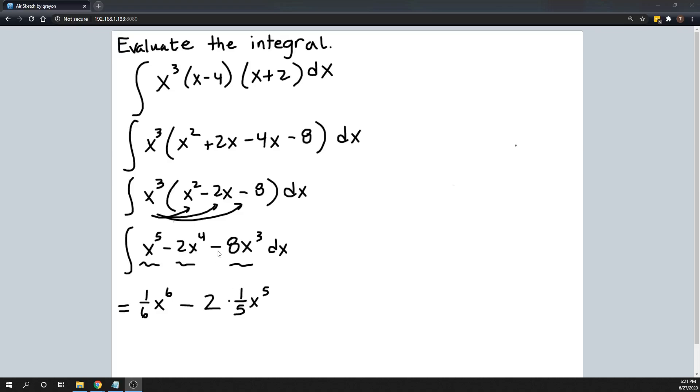Then again, going back to the difference rule, it says then subtract off the indefinite integral of this last piece right here. Again, I'm going to use the constant multiple rule that says just rewrite that 8 and then multiply by the indefinite integral of the x to the third part.